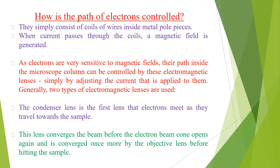Here we will discuss how the path of electrons is controlled. In a similar way to optical microscopes, lenses are used to control the path of the electrons. Because electrons cannot pass through glass, the lenses used here are electromagnetic — they simply consist of a coil of wires inside metal pole pieces. When current passes through the coils, a magnetic field is generated. Electrons are very sensitive to magnetic fields and their path inside the microscope column can be controlled by these electromagnetic lenses.